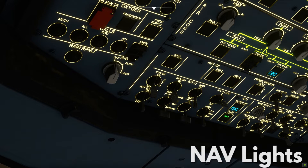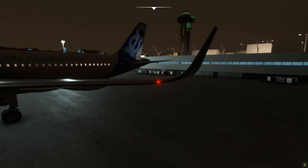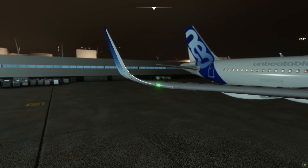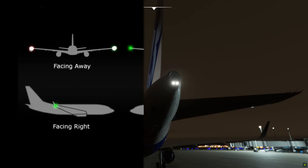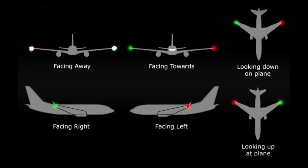Nav lights, or navigation lights, give information on the aircraft's position, heading, or status. Nav lights include a red light on the left wingtip, a green light on the right wingtip, and a white light on the tail end of the aircraft. Together, they make it possible for an observer to tell which direction the aircraft is facing. This is extremely helpful for pilots to avoid colliding with each other, especially at night when it's virtually impossible to figure out which direction an aircraft is flying towards if not for nav lights.